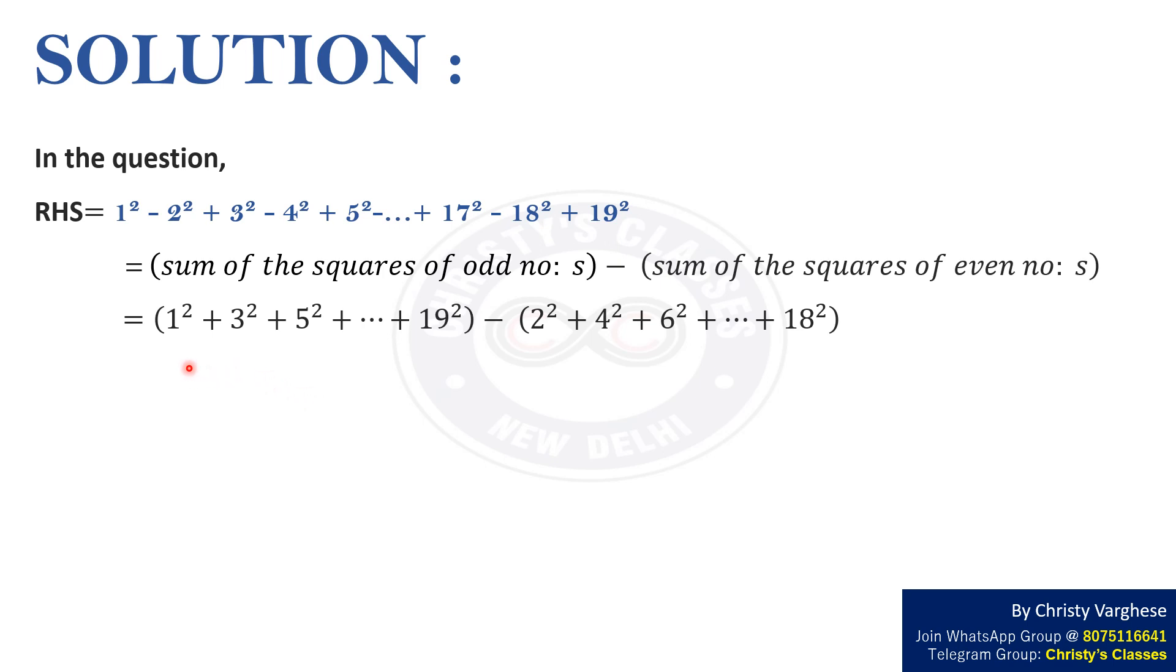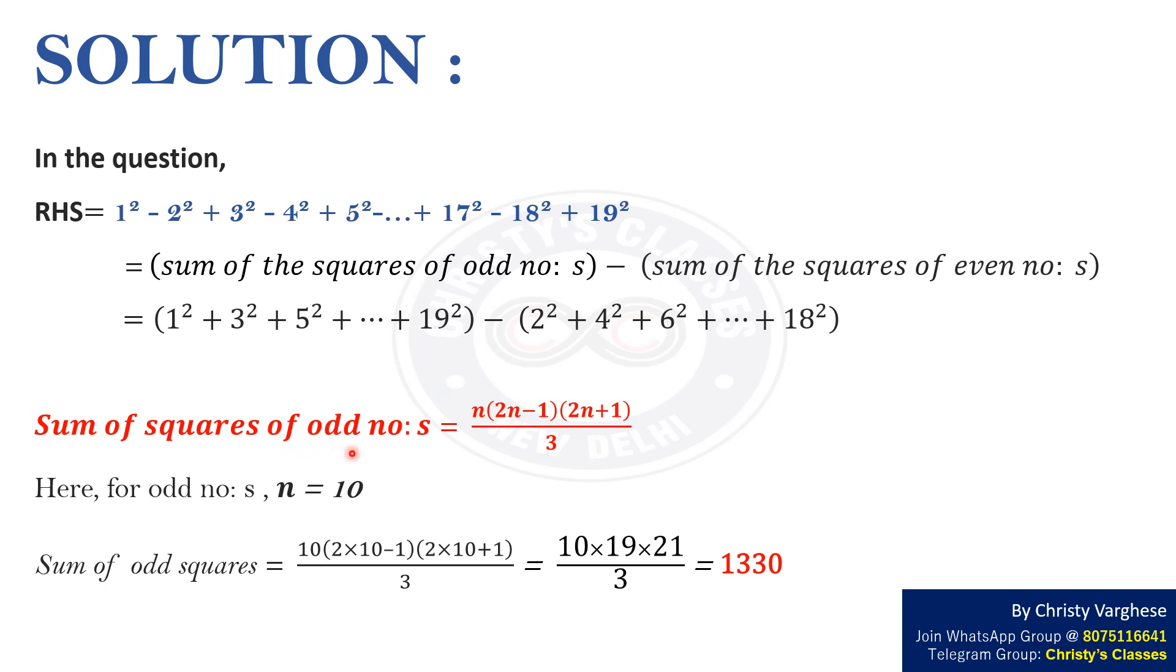This equals sum of squares of odd numbers up to 19 minus sum of squares of even numbers up to 18. We know that sum of squares of odd numbers equals n into 2n minus 1 into 2n plus 1 by 3.